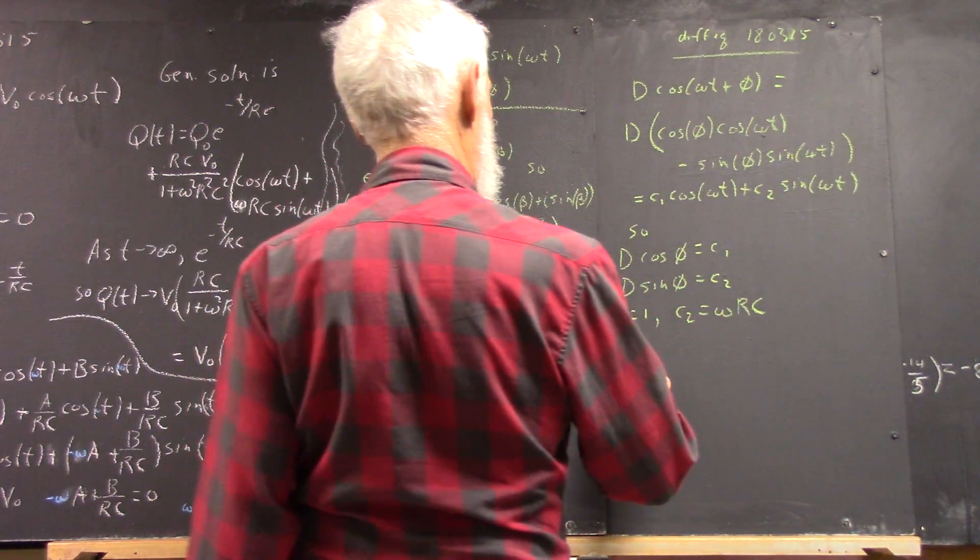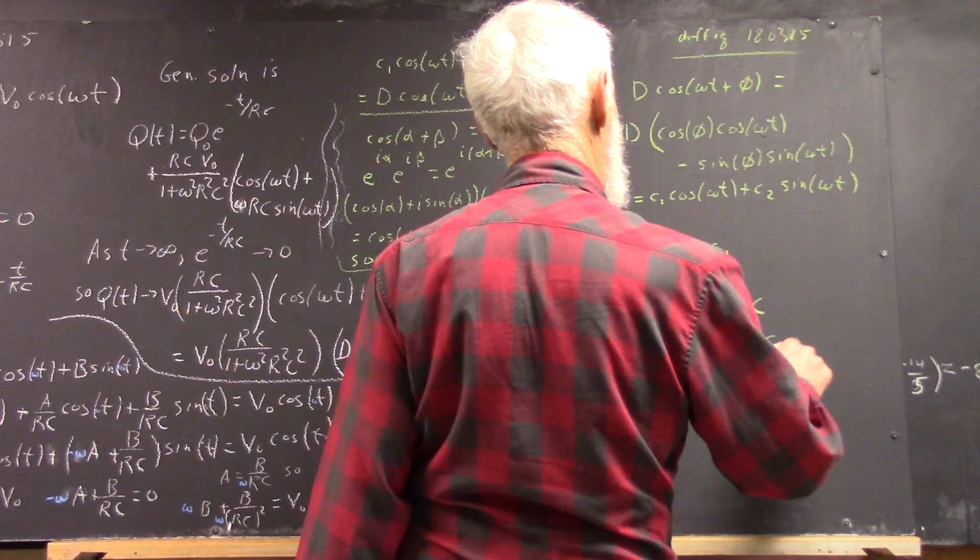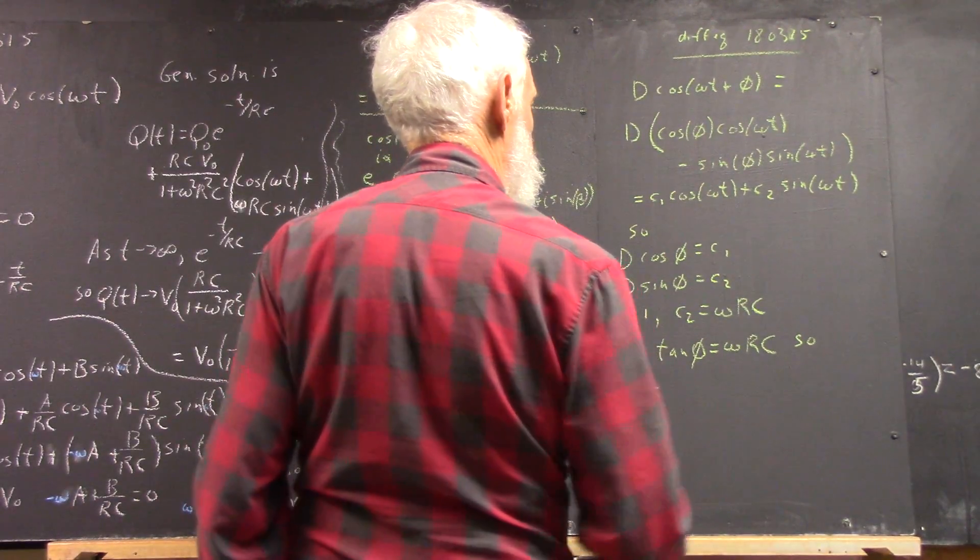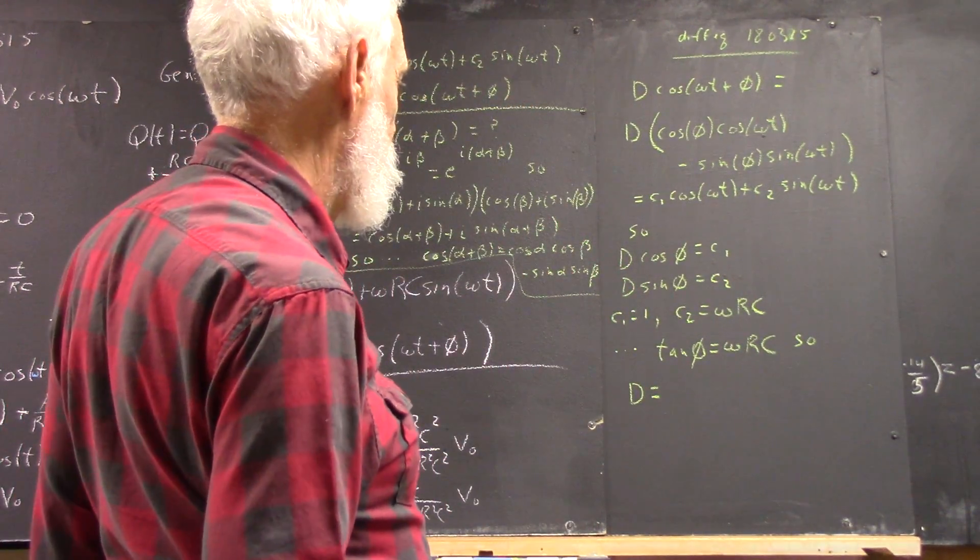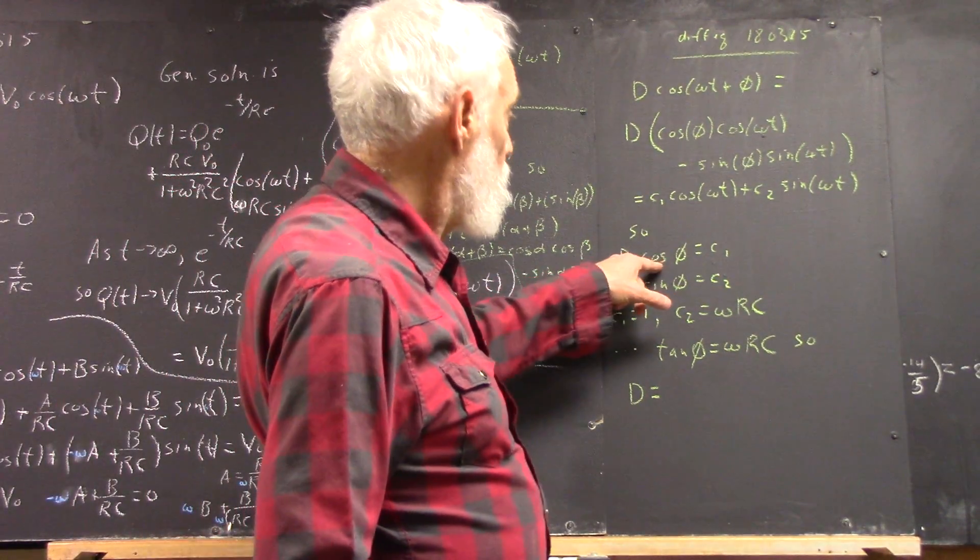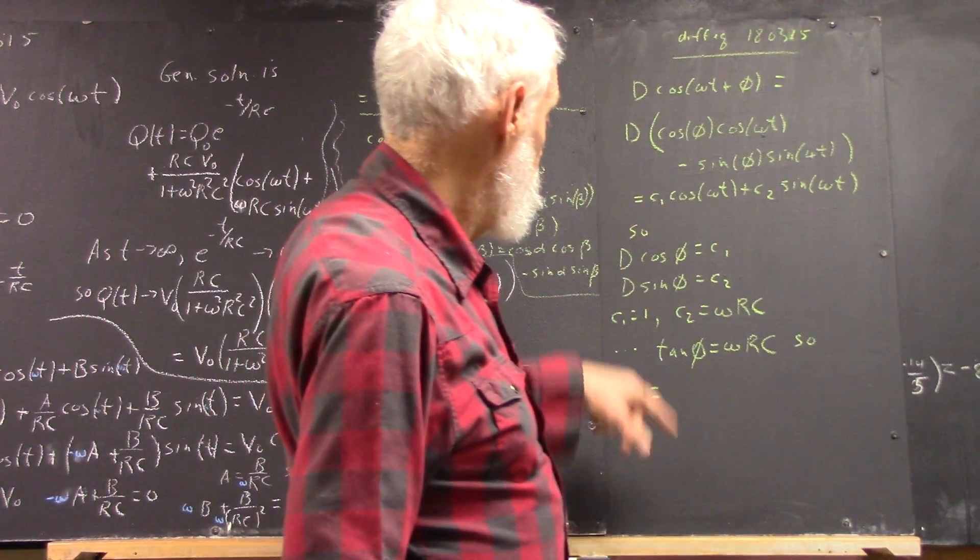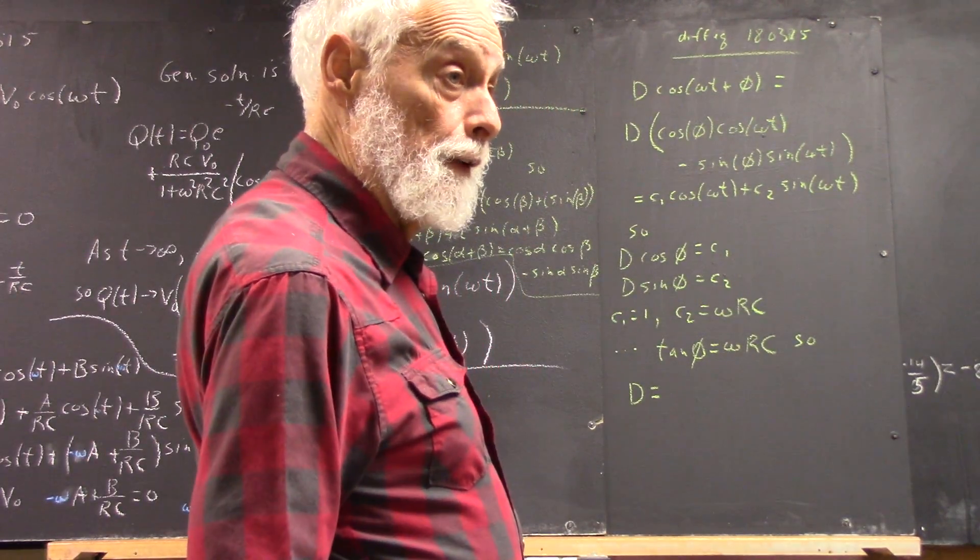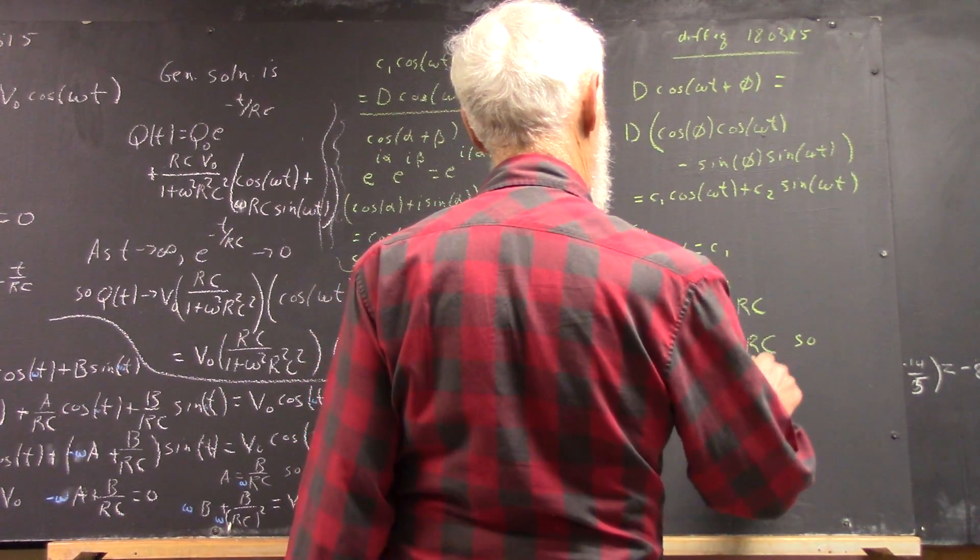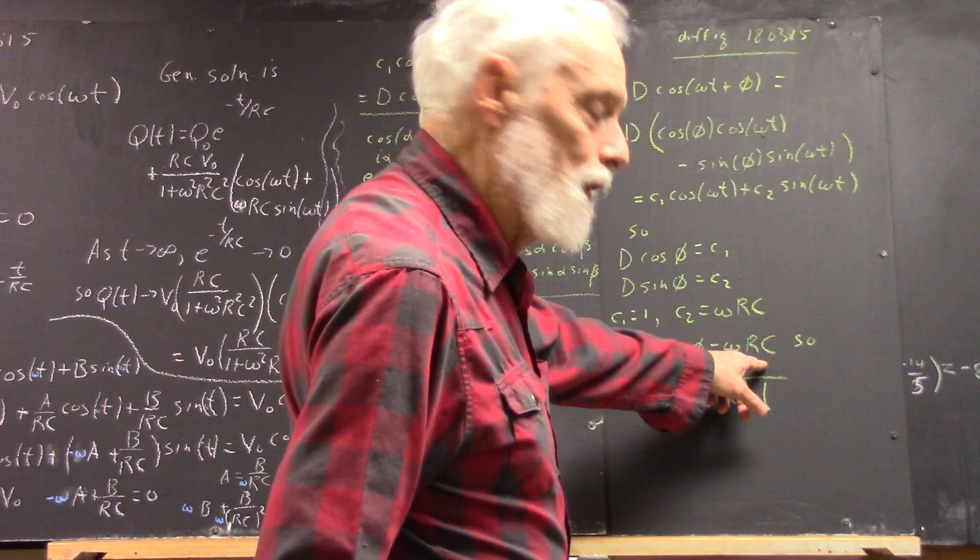So d cosine of phi equals 1, in this case. So d is 1 over cosine of phi, which is 1 over cosine of the arctangent of omega RC.